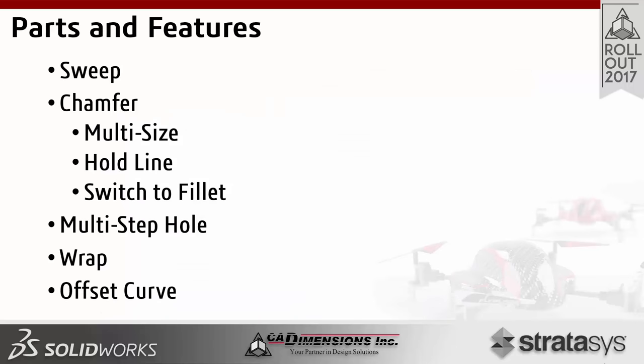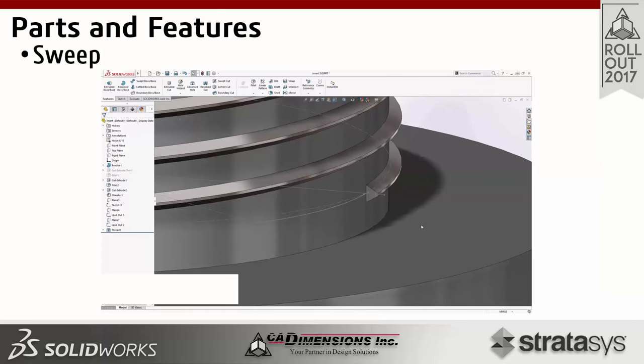Moving into parts and features, I have a handful of options added for 2017 to cover. There are nice changes to sweep to make it a little bit easier — last year in 2016 we got cool additions like a circular profile directly from the sweep tool and bi-directional sweep. They've added more controls for sweep this year. The chamfer tool got a remake with some cool new options, and there's a new tool for creating multi-step holes, plus a cool addition to the wrap tool.